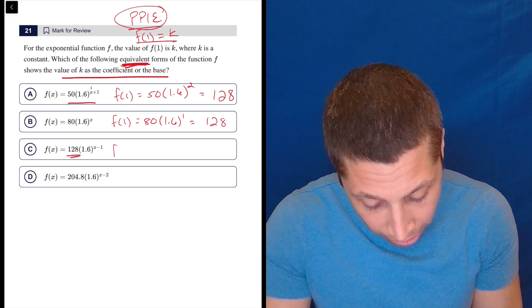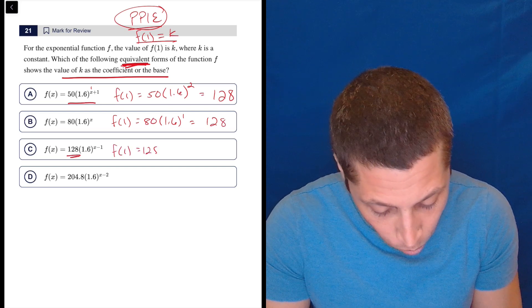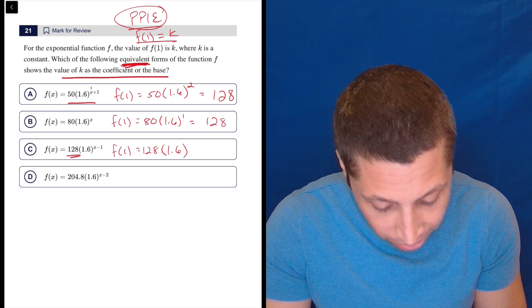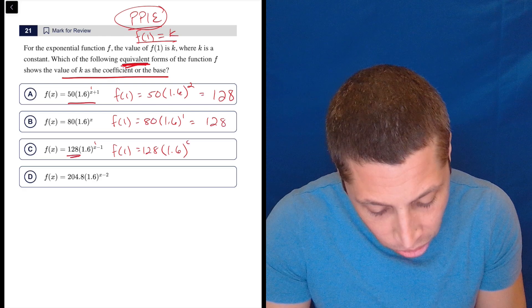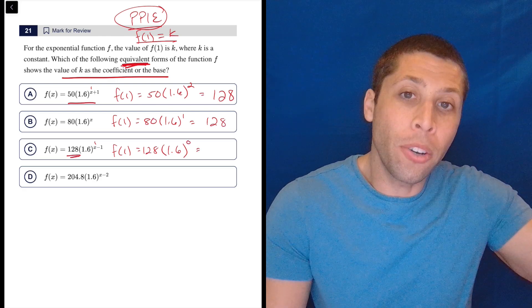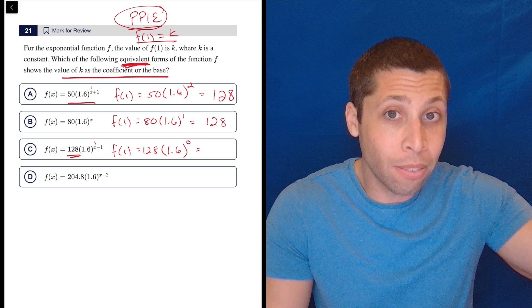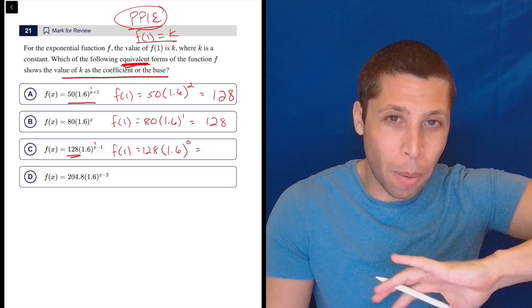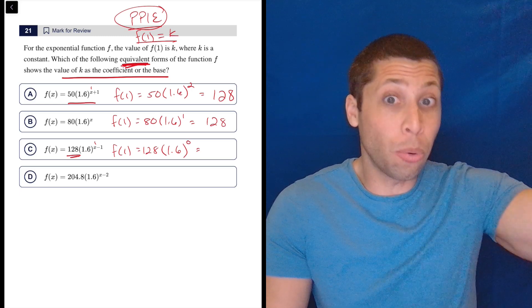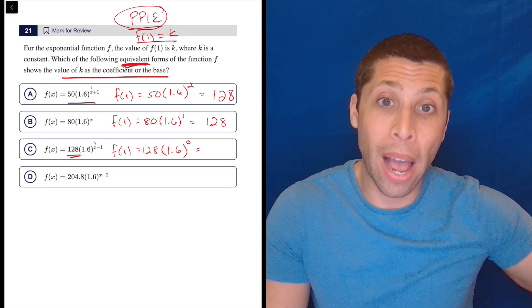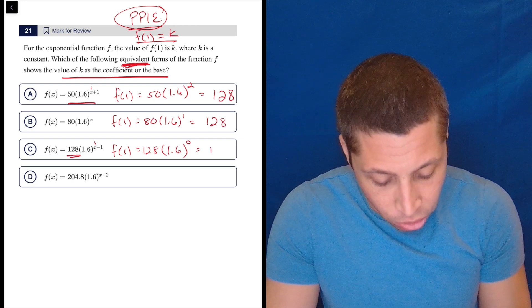Okay, let's do it again. F of 1 is equal to 128 times 1.6 to the 1 minus 1, which is 0. So no wonder 128 shows up in that equation because when we put 1 in for x, the base goes away because everything raised to the 0 power is 1.